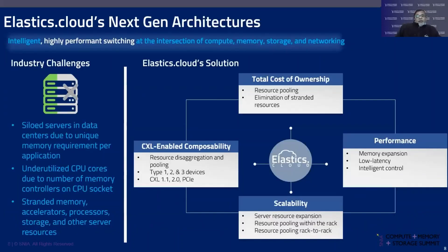Looking at next-gen architecture, let's examine the industry challenges. Servers are siloed in service providers' infrastructure because every customer has different requirements in terms of memory, storage, accelerators, and AI ASICs. This creates a siloed environment where only certain workloads run on certain portions of the infrastructure. There are also underutilized CPU cores due to the memory limitations each server can support, and stranded resources including stranded memory, stranded SSDs, stranded processors, and stranded AI ASICs.